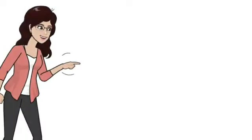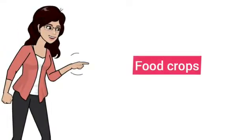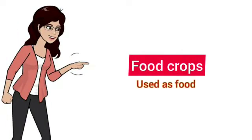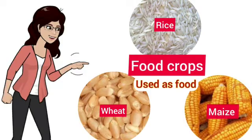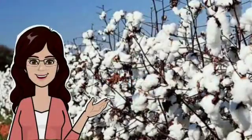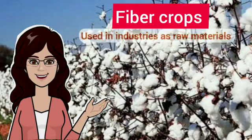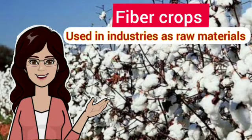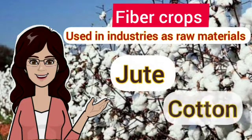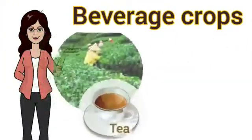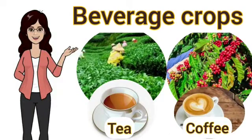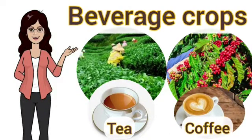The first one is food crops, which are used as food — for example wheat, rice, maize, etc. The second one is fiber crops, which are used in industries as raw materials, such as jute and cotton. The third one is beverage crops, like tea and coffee.